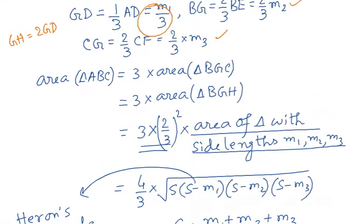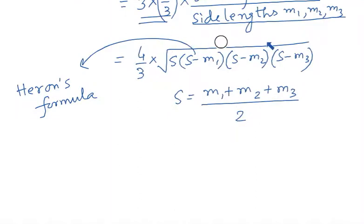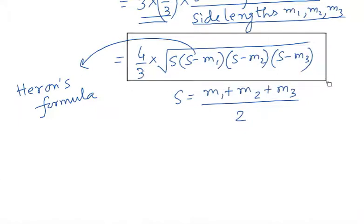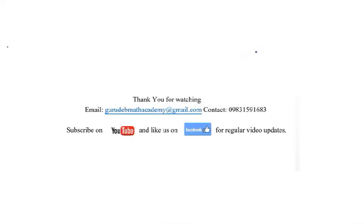So if the three median lengths of a triangle are M1, M2, and M3, the area of triangle ABC is (4/3)√[S(S−M1)(S−M2)(S−M3)], where S is the semi-perimeter of the triangle with side lengths M1, M2, M3. Thank you for watching. Please subscribe on YouTube and like us on Facebook for video updates.